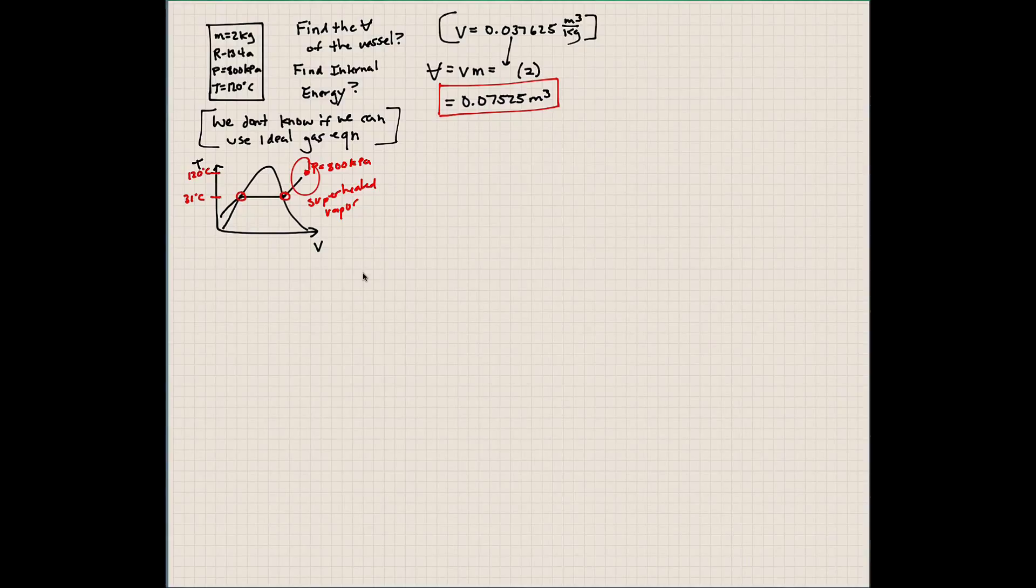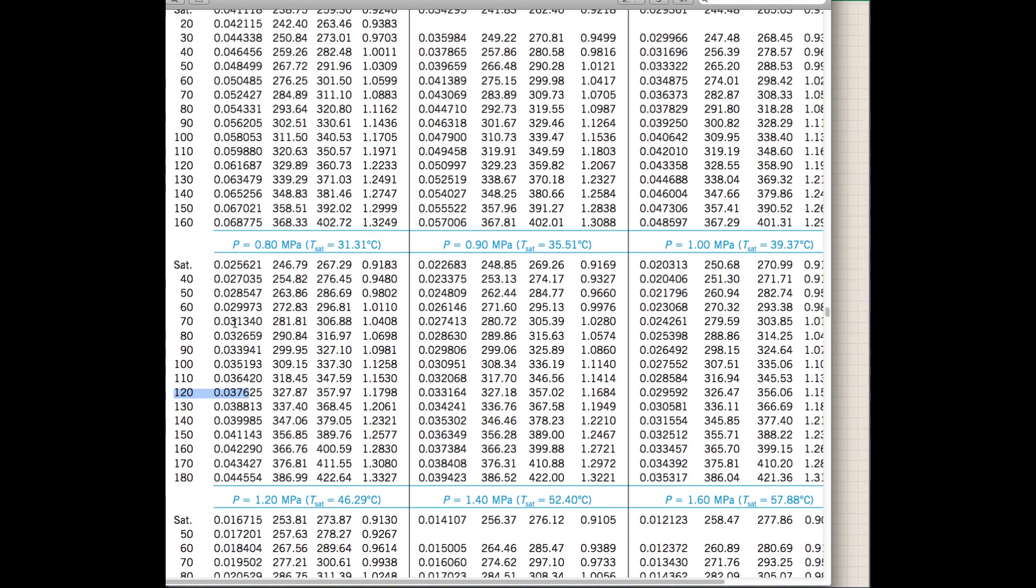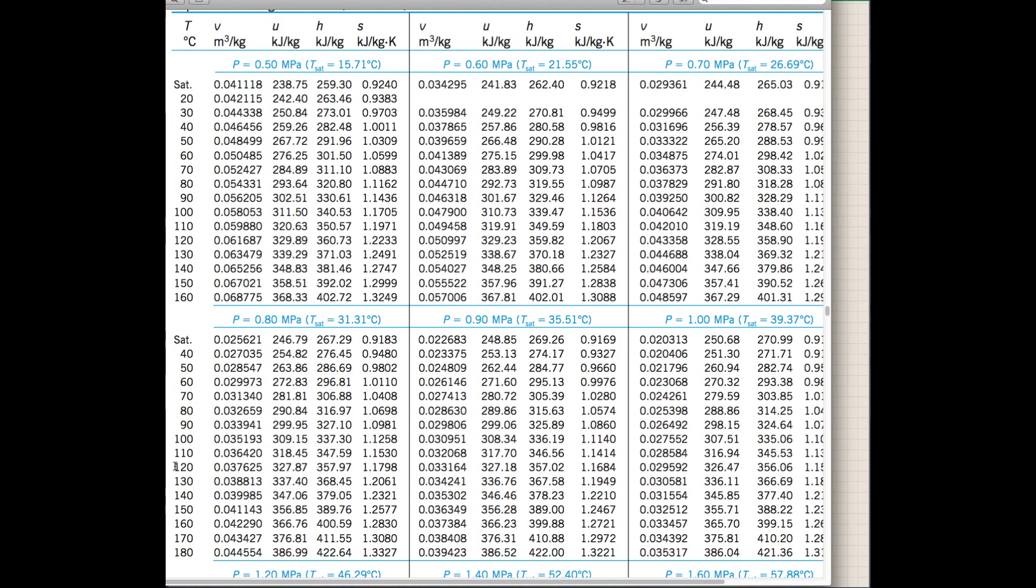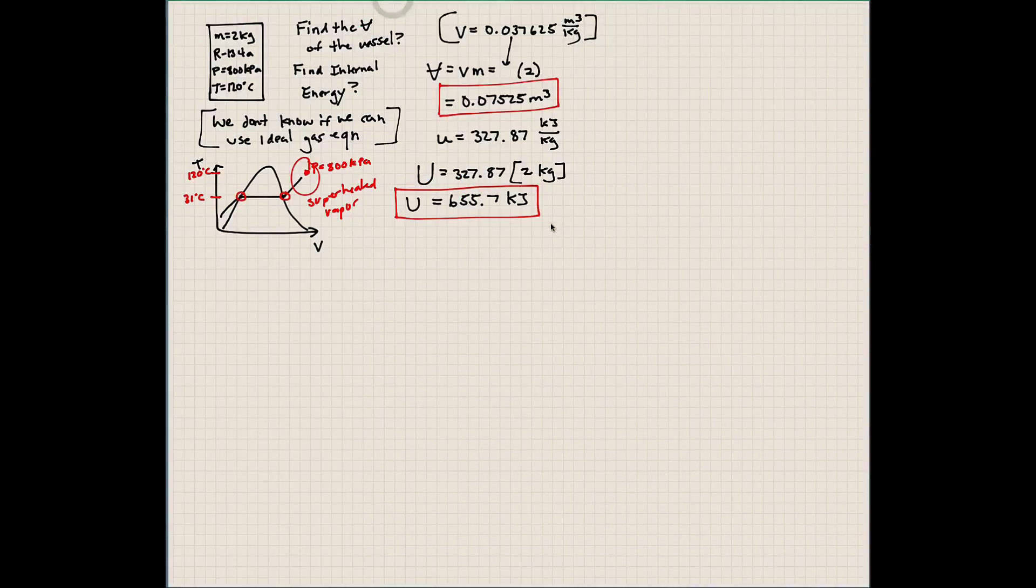Let's also find the total internal energy of this system. The total internal energy - we can find the specific value, which is per unit mass for the same condition. Let's see what column this corresponds to. It's the second column here. At 120 degrees Celsius, at 800 kPa, it's 327.87 kJ per kilogram. To get the total internal energy, we would have to multiply our specific internal energy times the mass. And our total internal energy here would be 655.7 kJ. That is how we would solve that problem. So there are your answers for this problem. I hope you can review them.